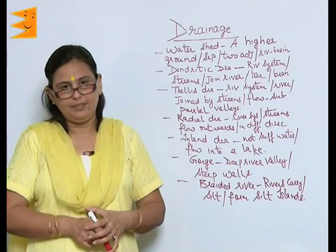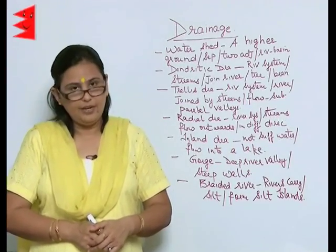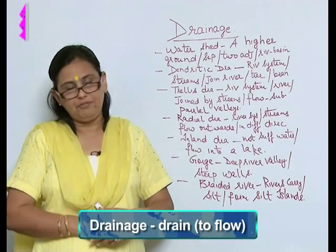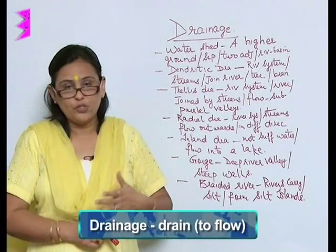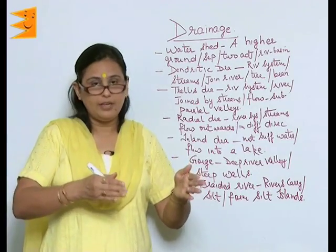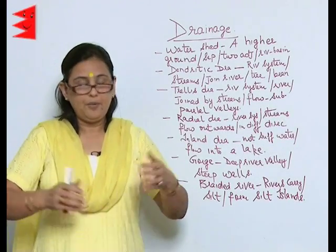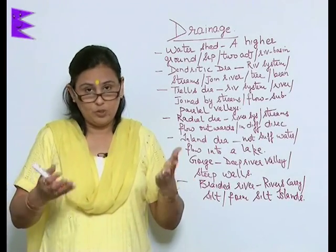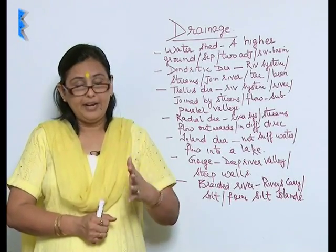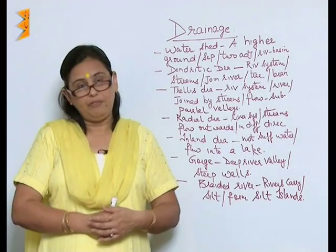Hi, this is Suchyadatta, your SST teacher teaching you the third chapter of Class 9 Geography Textbook — Drainage. The word drainage has been derived from the word drain which means to flow. Here we see that the rivers, the small ones join the big river and the big river falls into the sea or an ocean. There are tributaries and distributaries. The rivers make the soil fertile, and if there are no rivers the land becomes barren. Therefore drainage system plays a very vital role in the agricultural sector of the country.